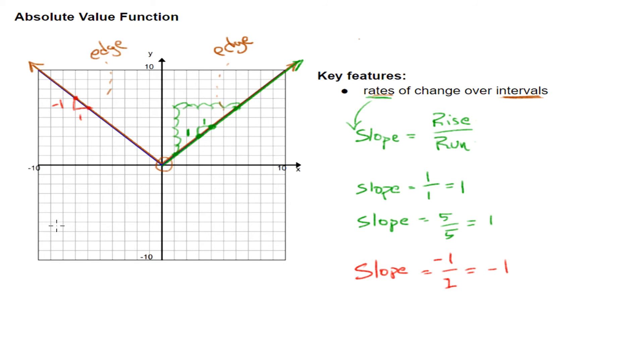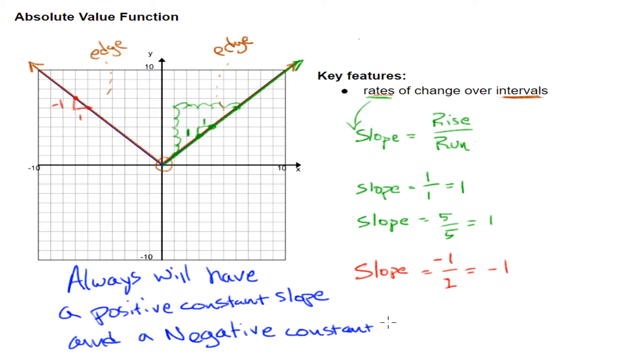To put this all together, an absolute value is always going to have a positive constant slope and a different section with a negative constant slope.